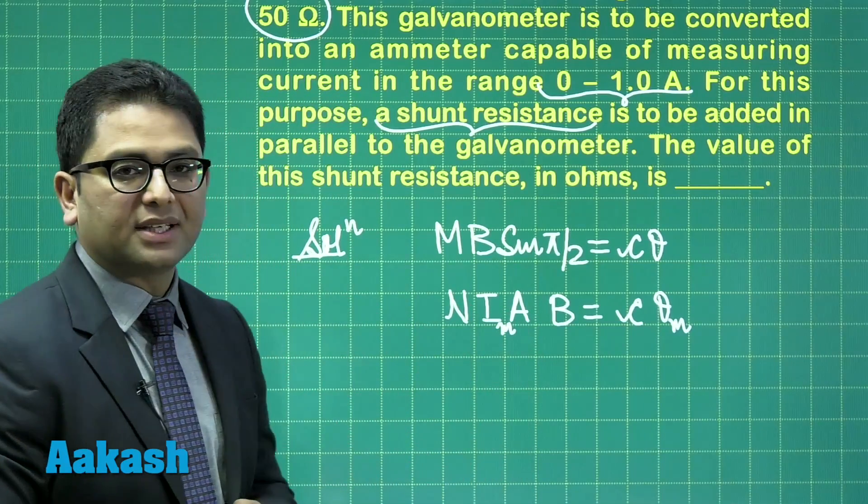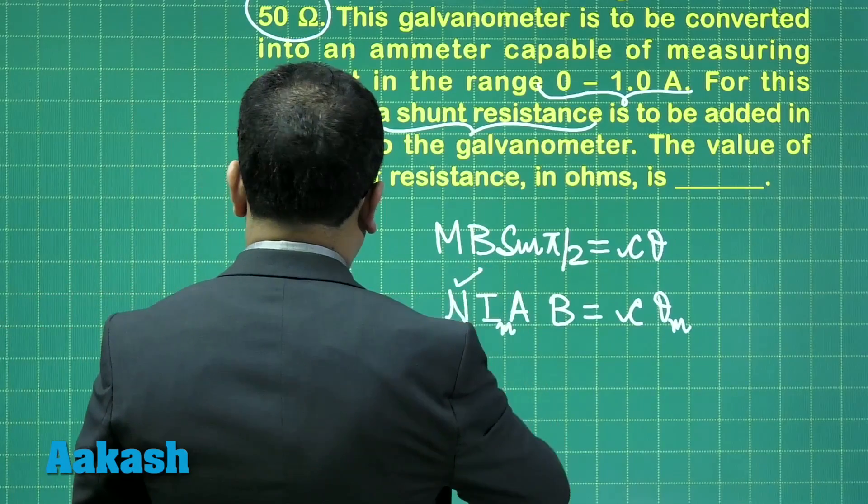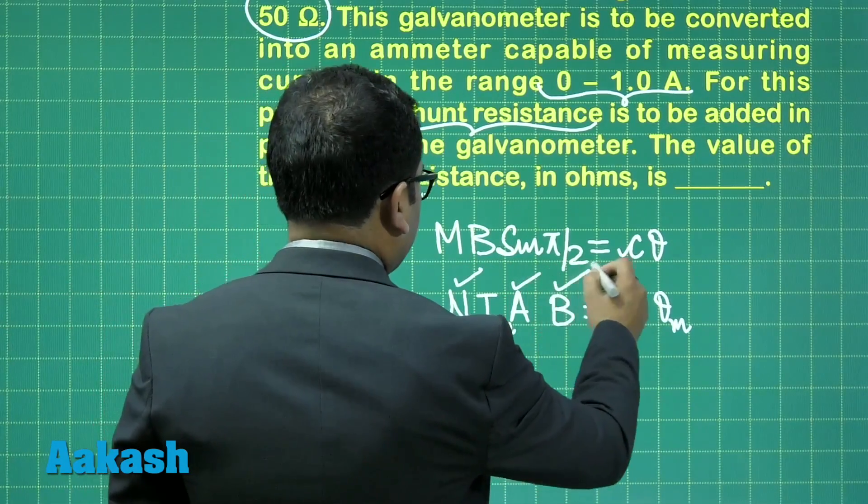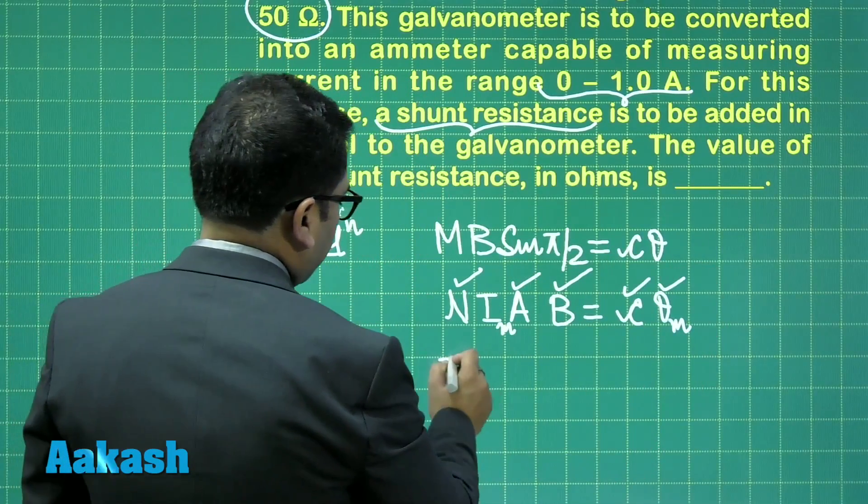The number of turns has been given, the area has been given, B has been given, C has been given, theta in radians has been given, and you calculate the value of I max.